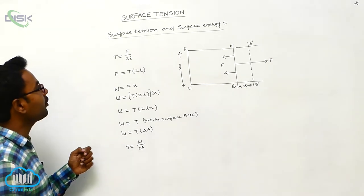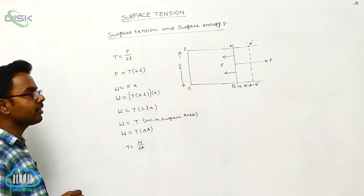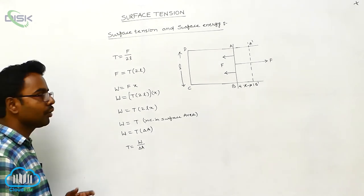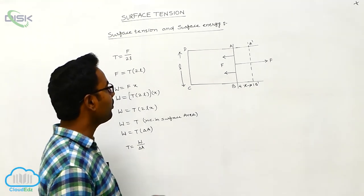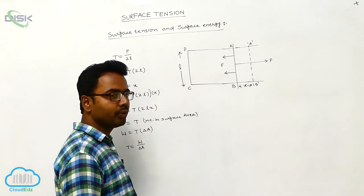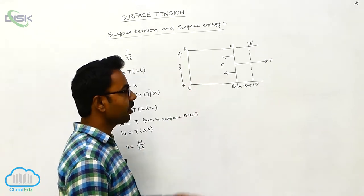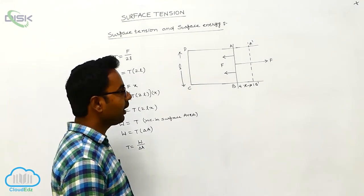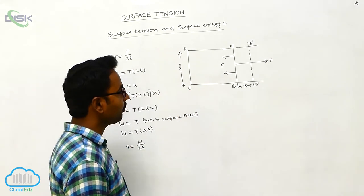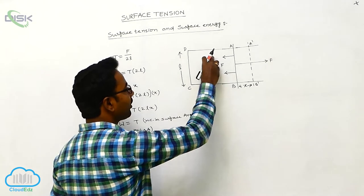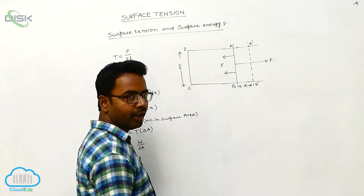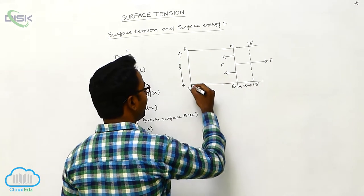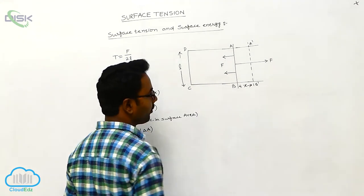Here we define and derive the relation between surface energy and surface tension. To derive this, we consider a rectangular frame ABCD, for which AB is the wire which can slide on the rectangular frame. Suppose this rectangular frame is dipped in a soap solution, and across ABCD a soap film is formed.